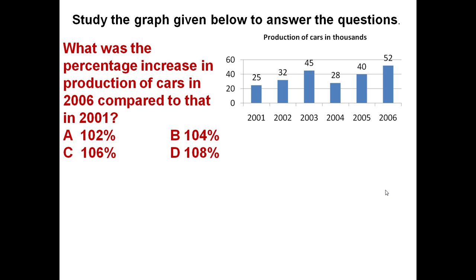Just to determine this increase in production, let us determine percent increase in production equals 52 minus 25 divided by 25 into 100. Final production minus initial production, and this is the base means we are comparing it with respect to 2001. 52 minus 25 divided by 25 into 100, this is equal to 108 percent. So answer is 108 percent, option D.